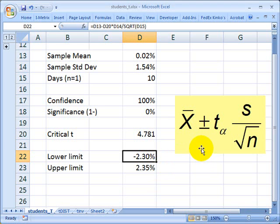So that's an application of the student's T, the critical T value in the student's T distribution. This is David Harper of the Bionic Turtle. Thanks for your time.